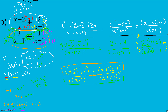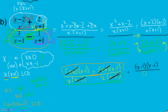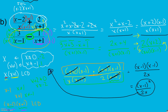I can simplify here because anything divided by itself is just 1. This gives me (x minus 1)(x minus 1) over 2x. I can rewrite the numerator as (x minus 1) squared over 2x — that's my final answer, as long as x is not one of those four restricted values.